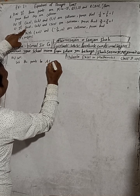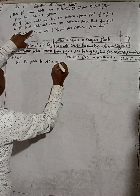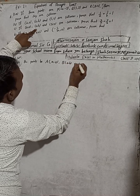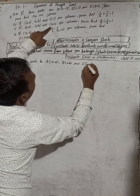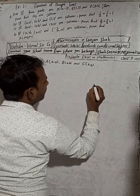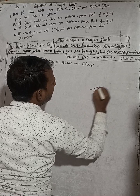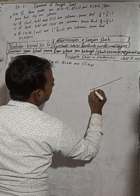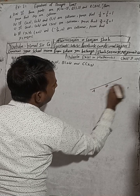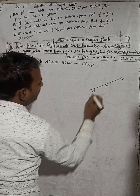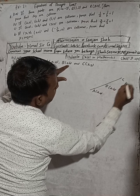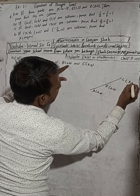Let the points be: capital A = (a, 0), capital B = (0, b), and capital C = (x, y). These points are collinear, meaning they lie on the same line.